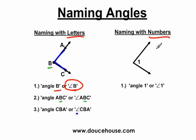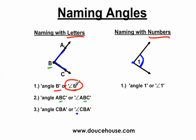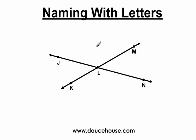Another way of naming angles is to use numbers — this is the way I think is easiest. The number one is placed between this ray and this ray, which share a common endpoint. Since these two rays help create the angle, we can use the number between them, so we call it angle one or the symbol for angle one. However, we can't always just use the vertex to name angles, so I'm going to jump into a more complex type of angle-naming problem.